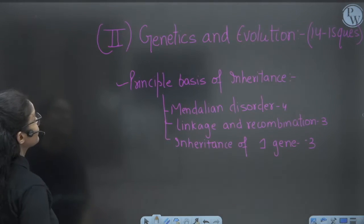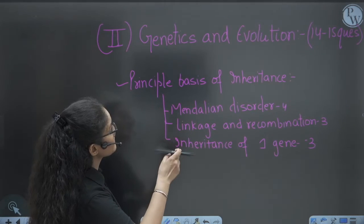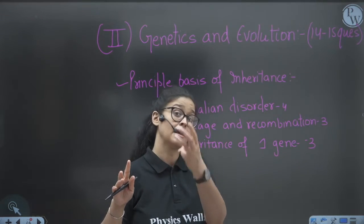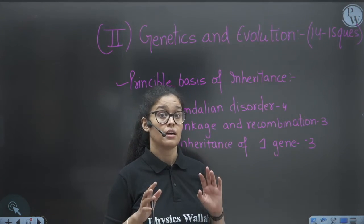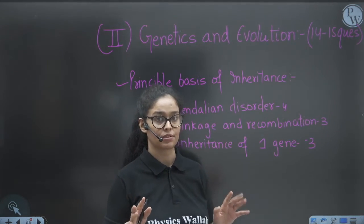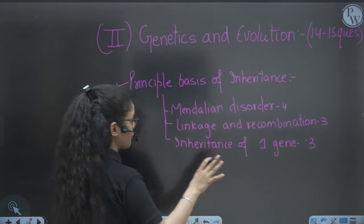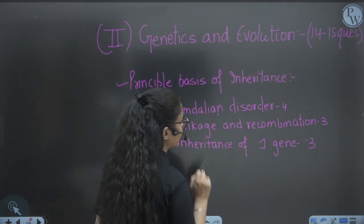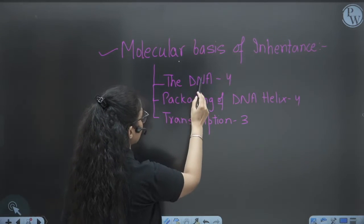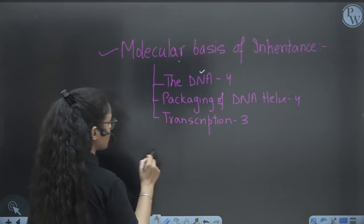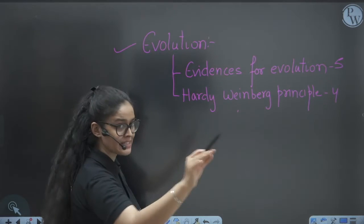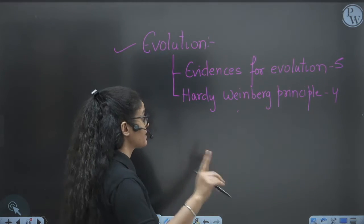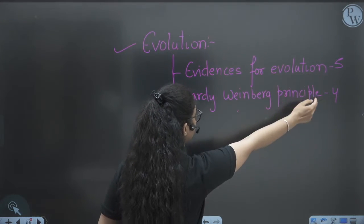Genetics and Evolution is the highest-weighted unit with 14 to 15 questions from just three chapters — you cannot skip a single topic. Most frequently asked: Principles and Basis of Inheritance and Mendelian Disorders — four questions on average; Linkage and Recombination — three; Inheritance of One Gene — three. Molecular Basis of Inheritance: DNA — four questions; Packaging of DNA — four; Transcription — three. Evolution: Evidences of Evolution is asked heavily in past 10 years — you cannot skip it. Hardy-Weinberg Principle — five to four questions on average.